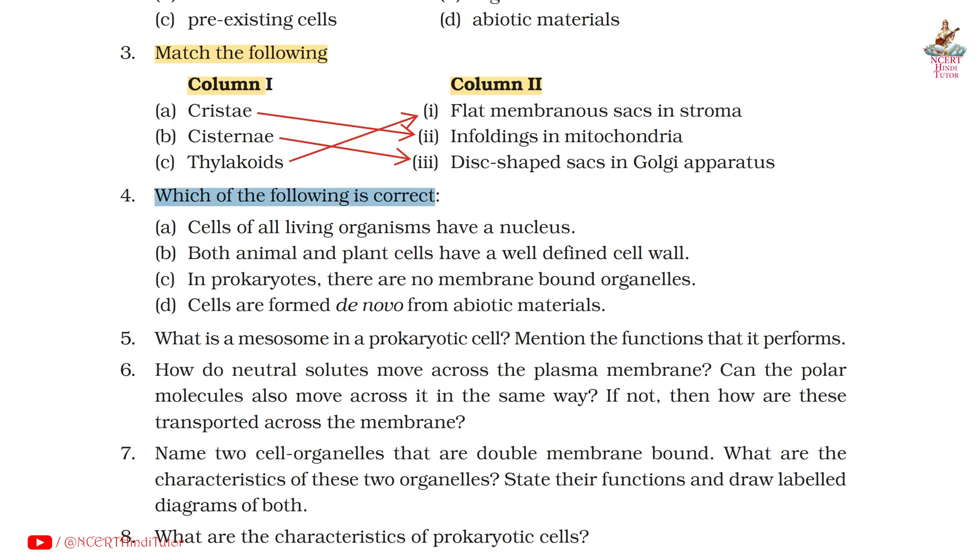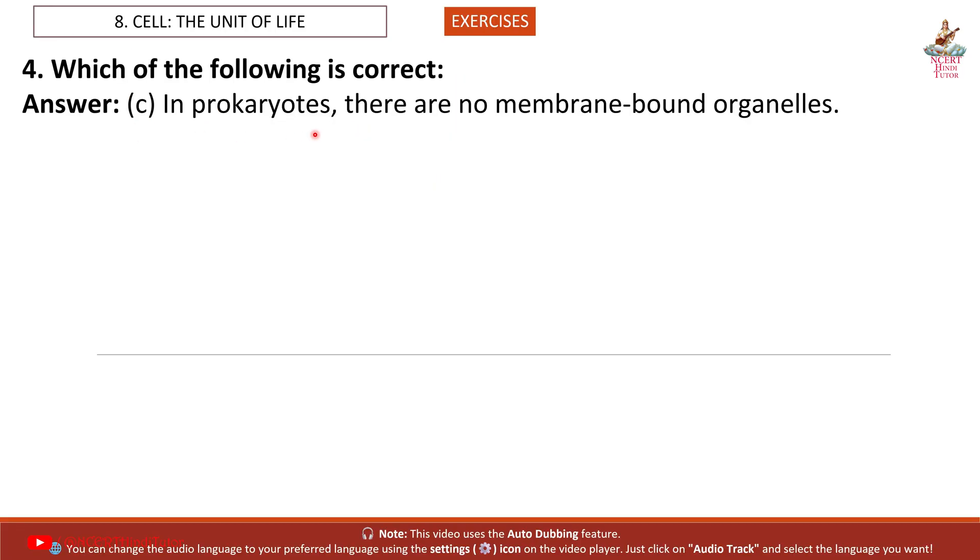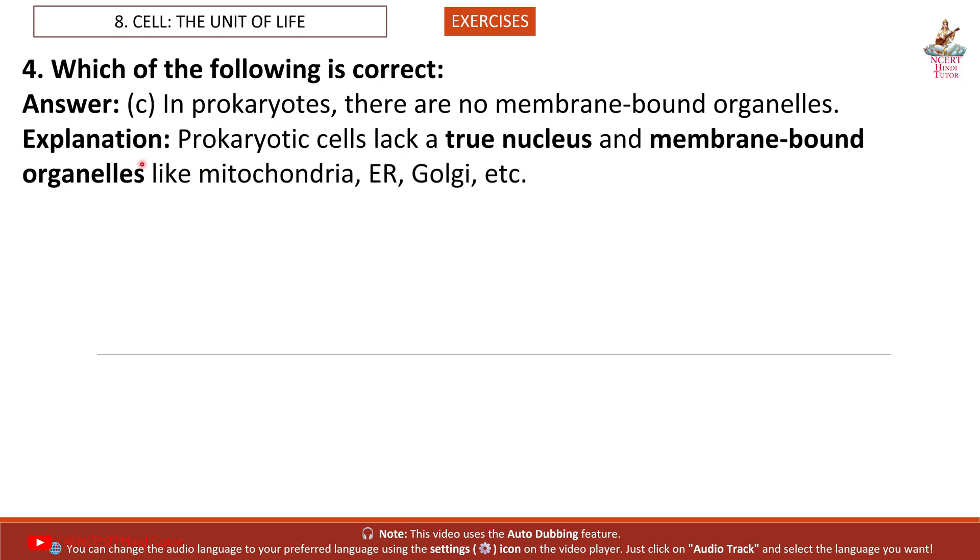Question 4: Which of the following is correct? Answer: C. In prokaryotes, there are no membrane-bound organelles. Explanation: Prokaryotic cells lack a true nucleus and membrane-bound organelles like mitochondria, ER, Golgi, etc.